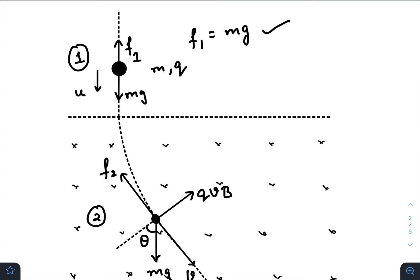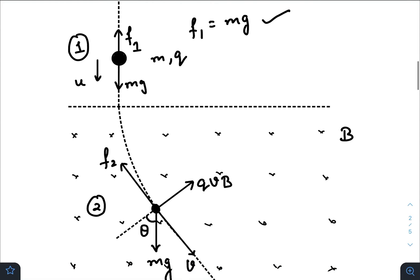Now suddenly when the ball crosses this point, a magnetic field in horizontal direction of magnitude B has been turned on.